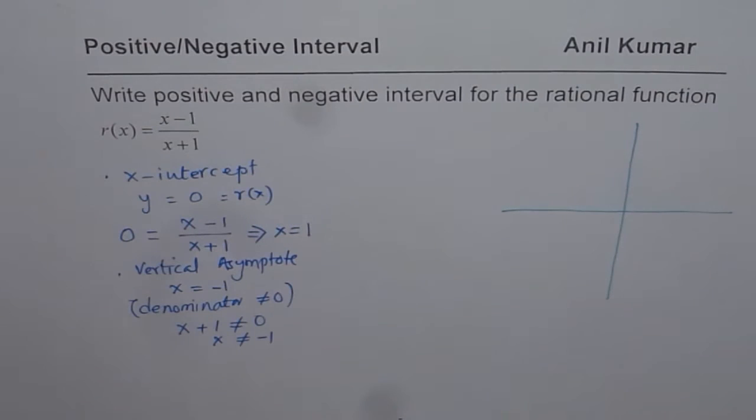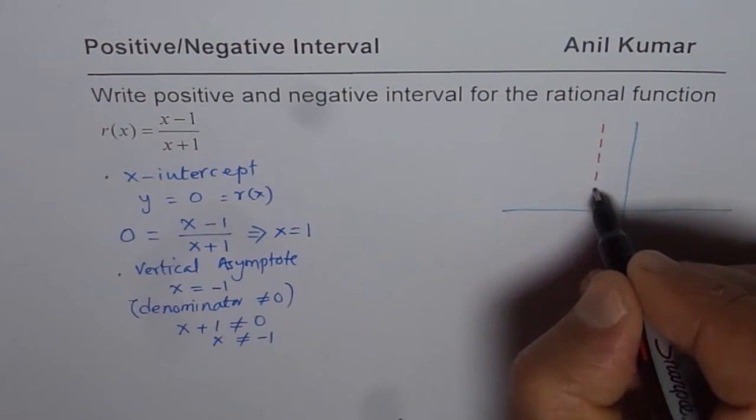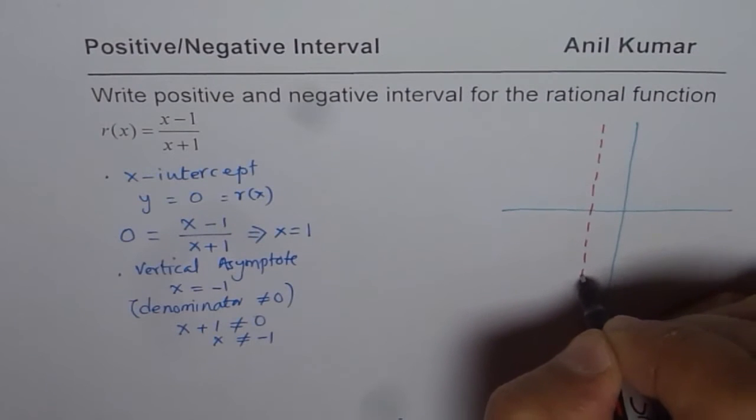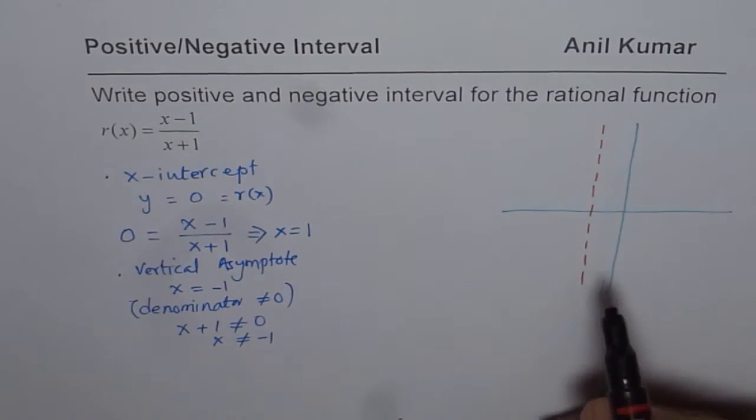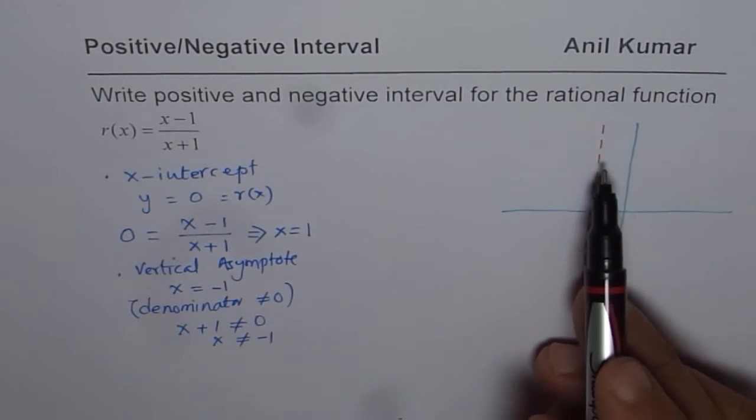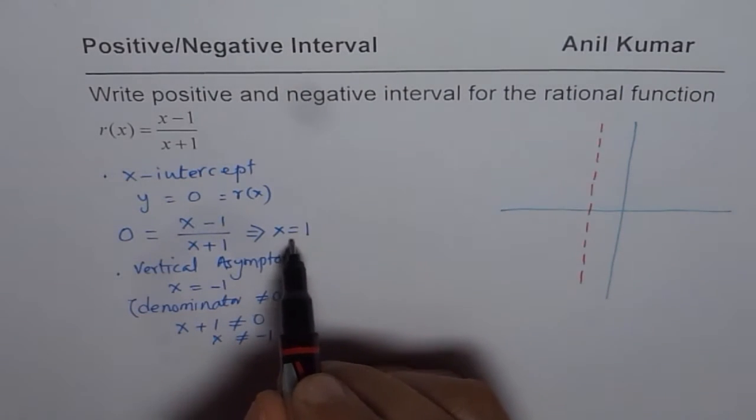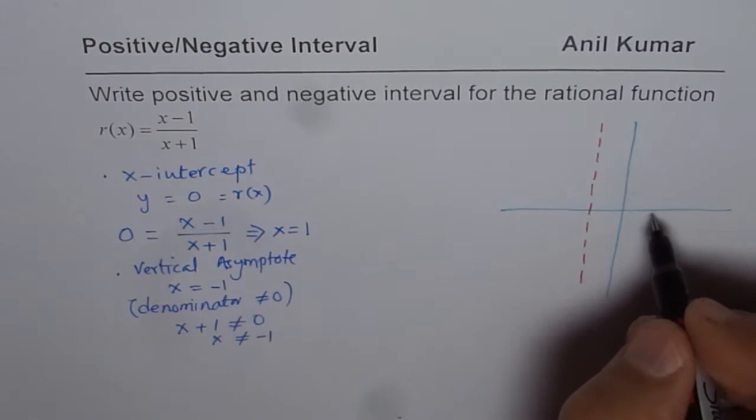So what we are saying is that we have a vertical asymptote, but it is never there. As x-value approaches minus 1, it approaches positive infinity or negative infinity. And we also found that the x-intercept is equal to 1.